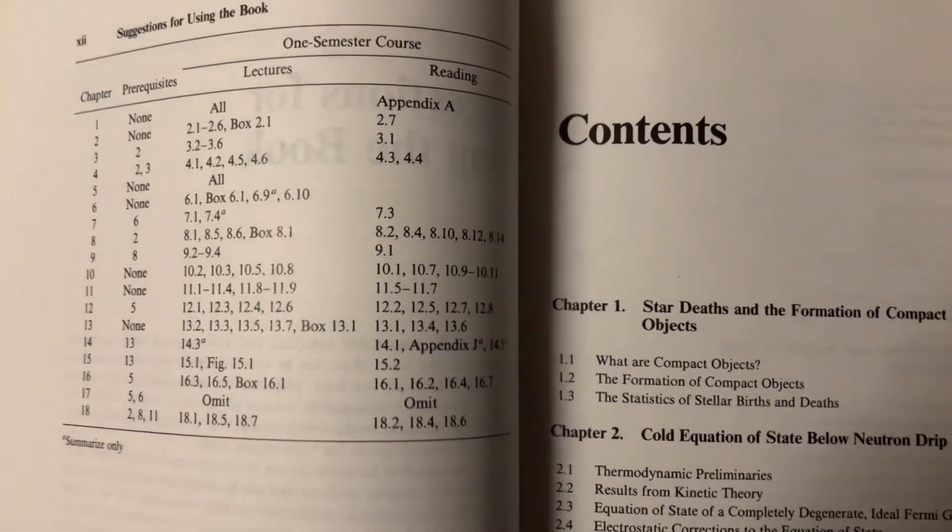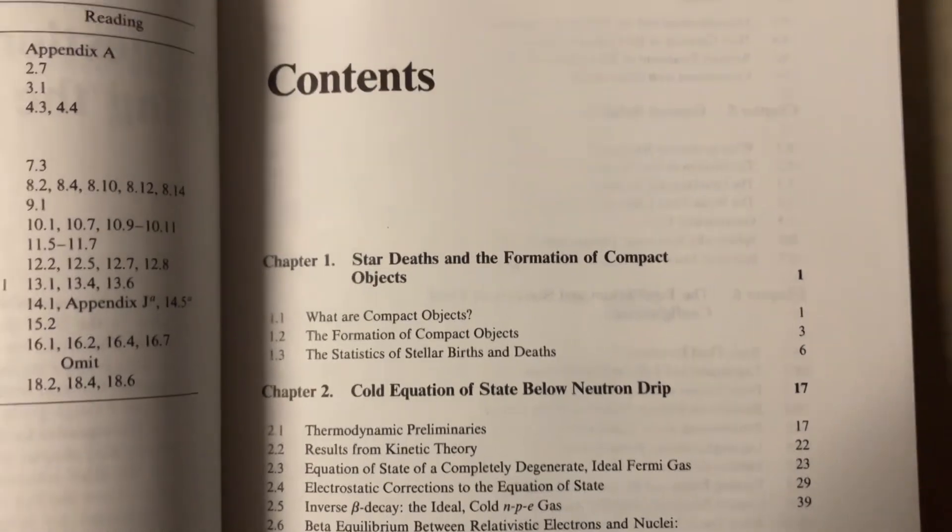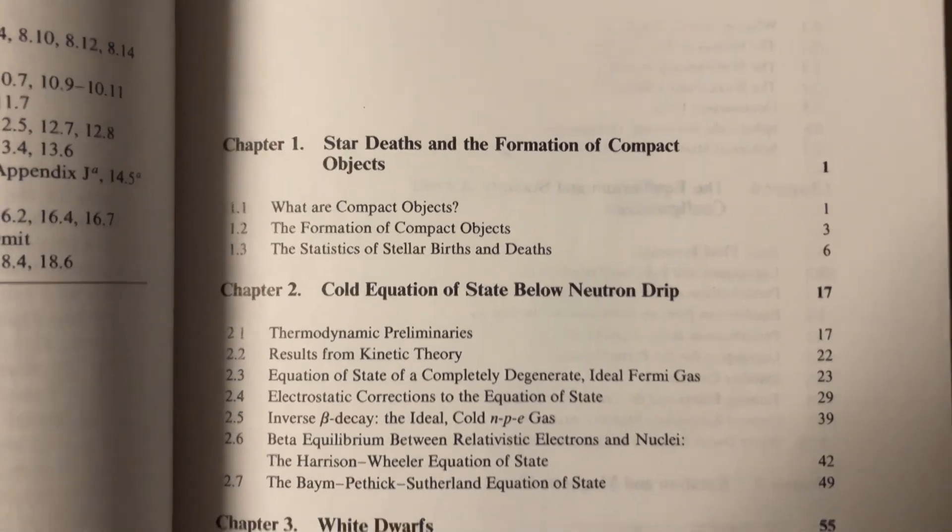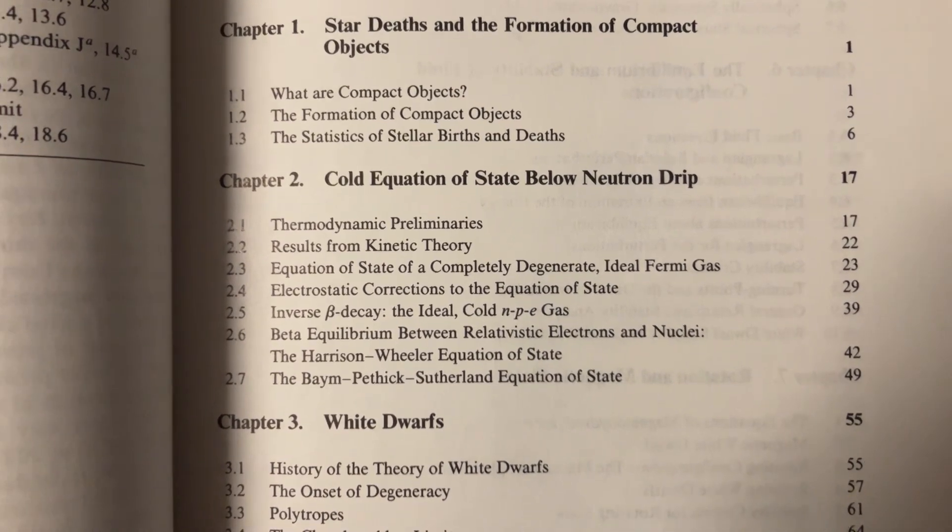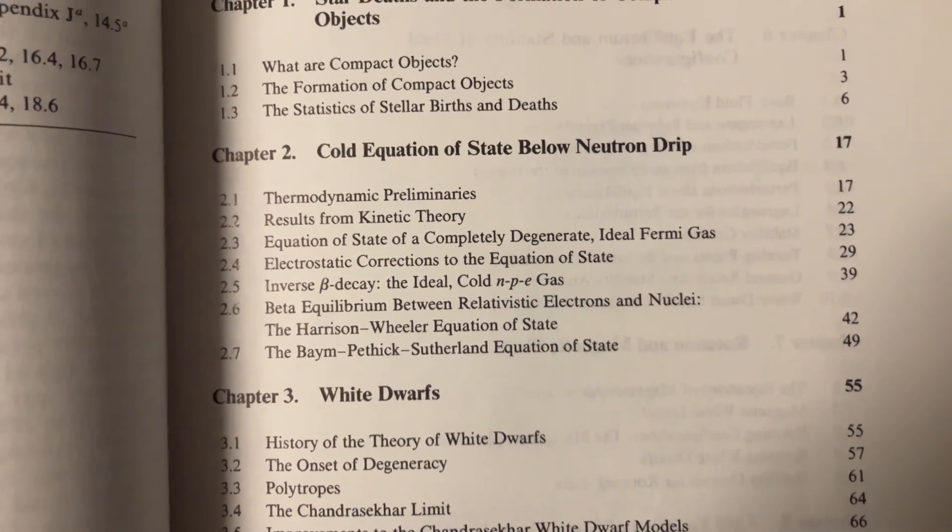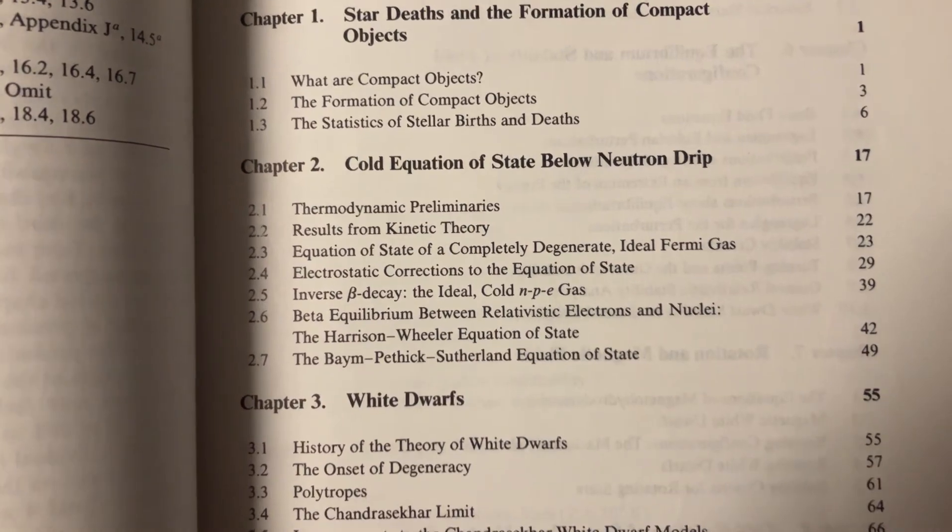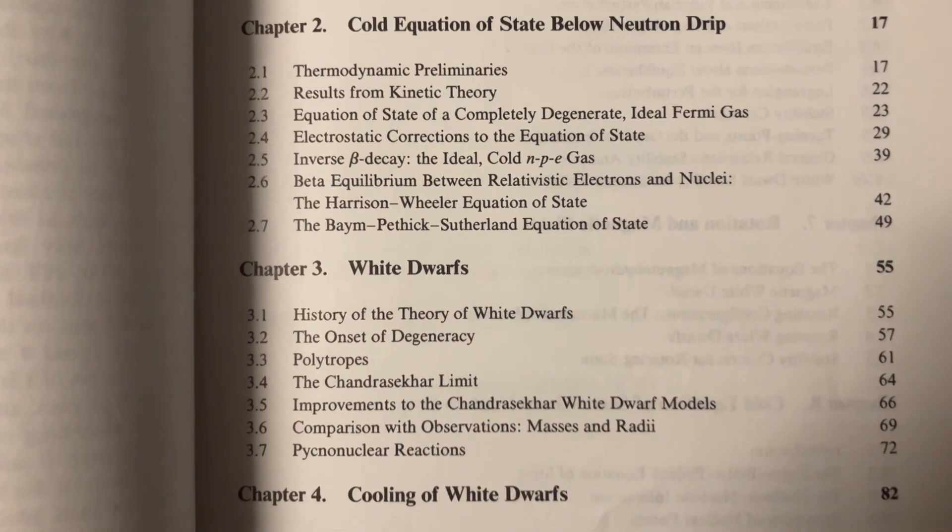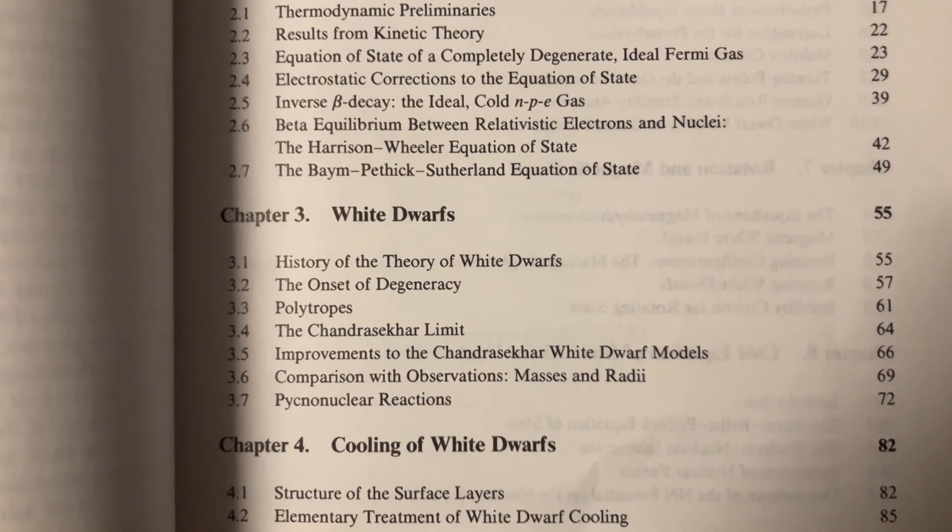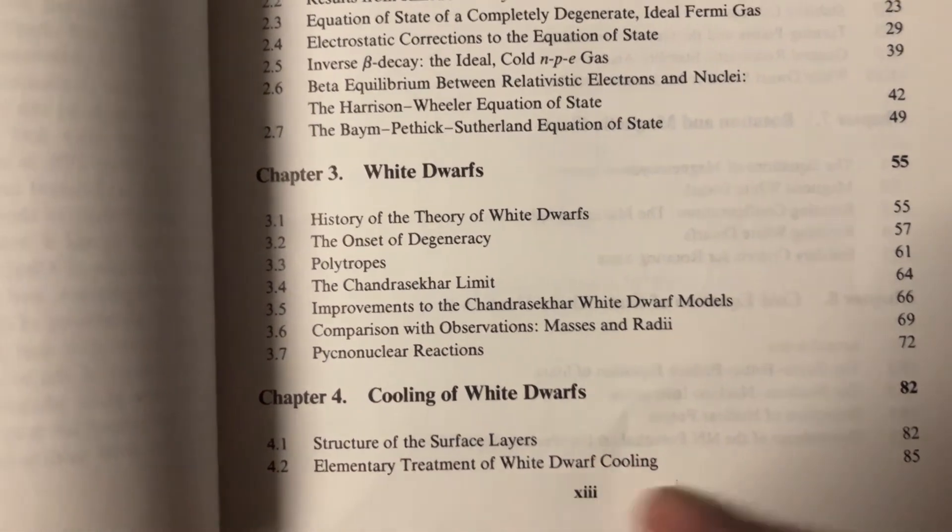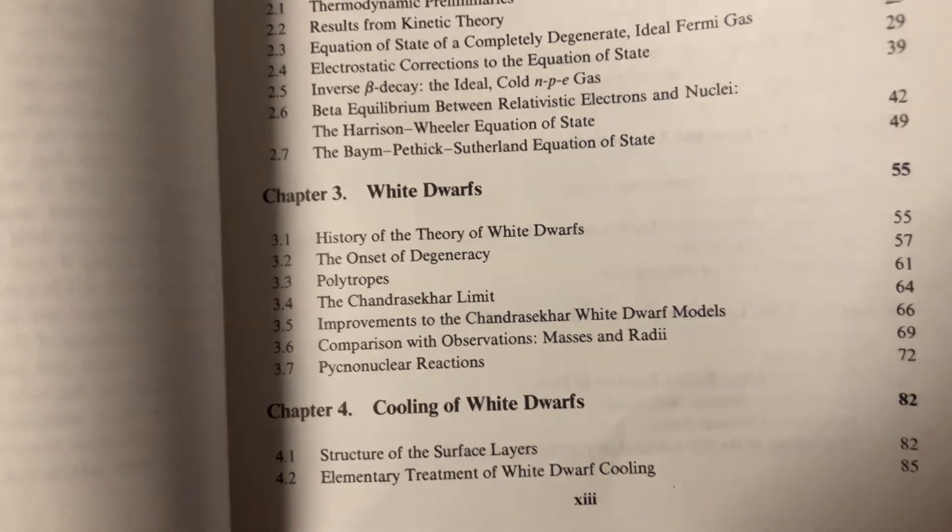Some prerequisites, lectures and readings to do. And then we have star deaths, the cold equation, the state below neutron drip. Inverse beta decay, cold beta equilibrium, equations of state, white dwarfs, the Chandrasekhar limit, masses and radii, cooling of white dwarfs, surface layers.